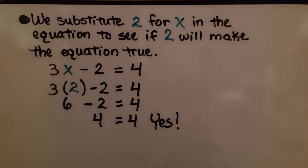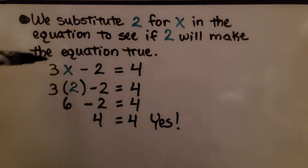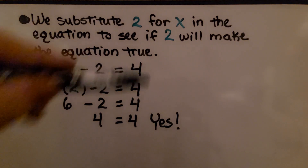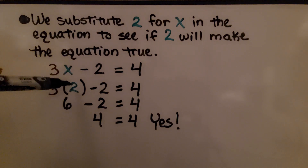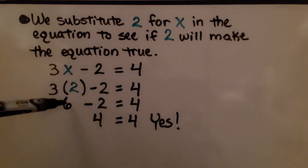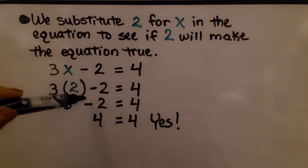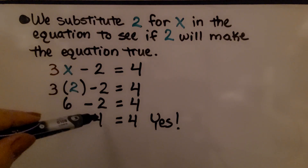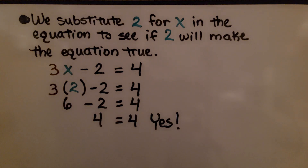We can check our work to see if we did it correctly. We substitute 2 for x in the equation to see if 2 will make it true. We had 3x minus 2 is equal to 4. Putting 2 in for x gives us 3 times 2 minus 2 is equal to 4. Well, 3 times 2 is 6, so we have 6 minus 2, which is 4. And 4 is equal to 4 — so yes, we did it correctly. We know x is equal to 2 in this equation.